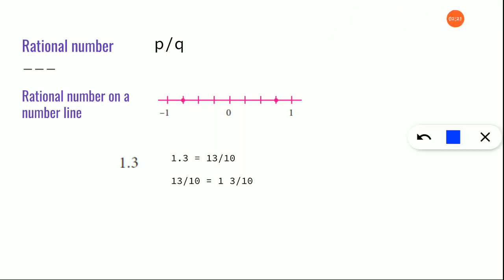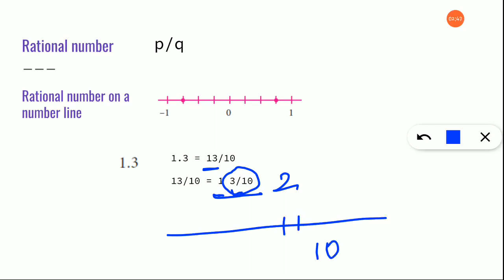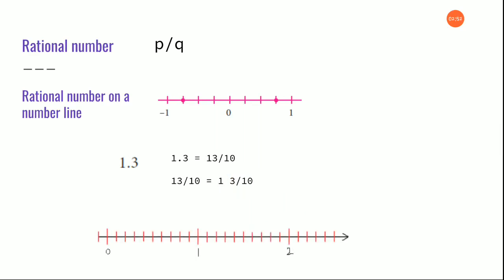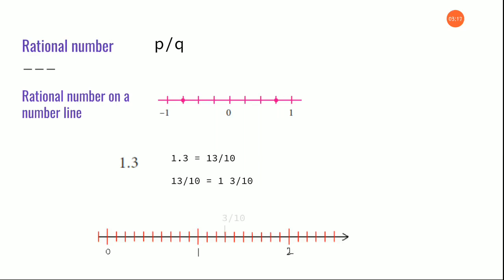Since the numerator is higher than the denominator, you are going to convert it to a mixed fraction. So the answer here is 1 and 3 by 10. Looking at this, it starts from 1 and ends somewhere between 2, and the fractional part is 3 by 10. So the number line is going to be divided into 10 equal parts. We are going to draw a number line starting from 1, count the parts as 1 by 10, 2 by 10, 3 by 10 — so this is the point where 1 and 3 by 10 lies.